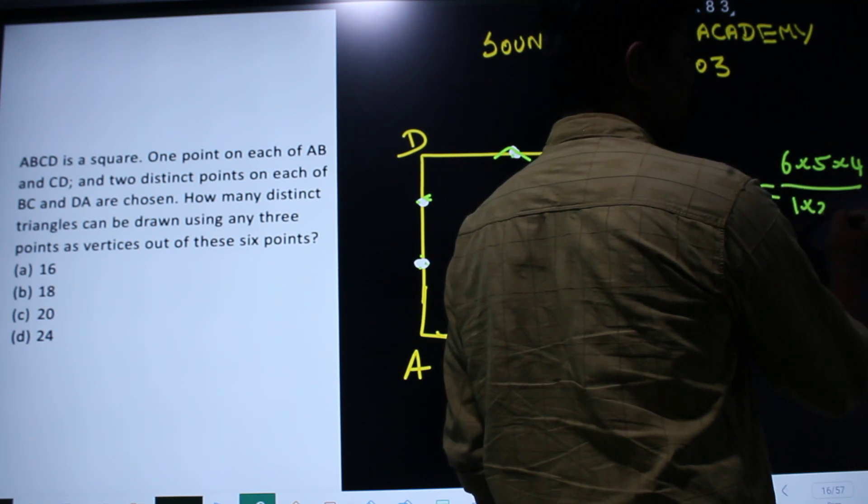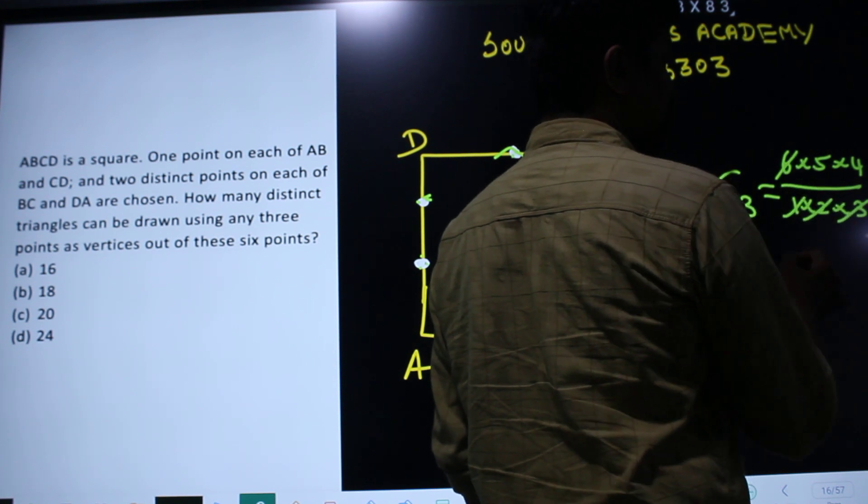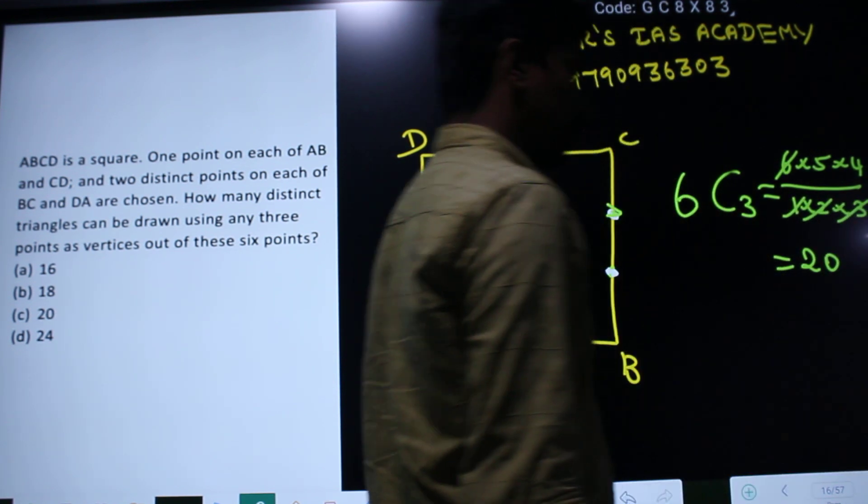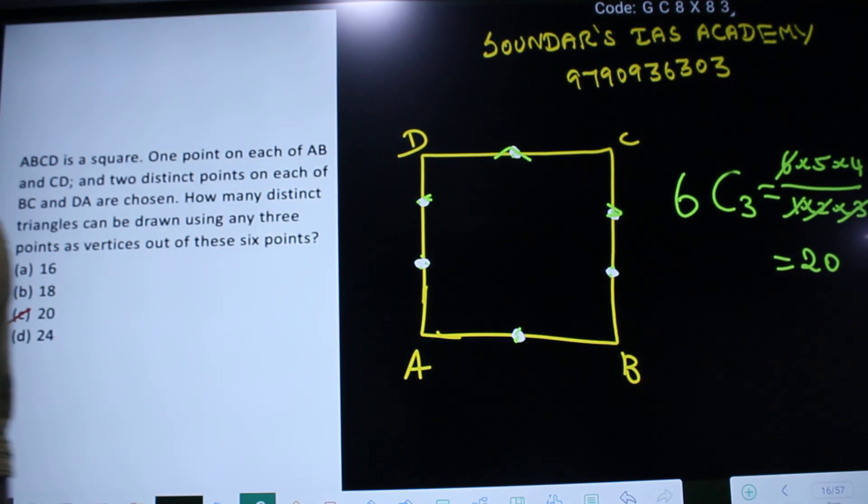6C3: 1 into 2 into 3, this is 6 into 3, then 1 into 2 into 3 is 6, answer 5 times 4 is 20. So we will find out that the answer is 20. Thank you.